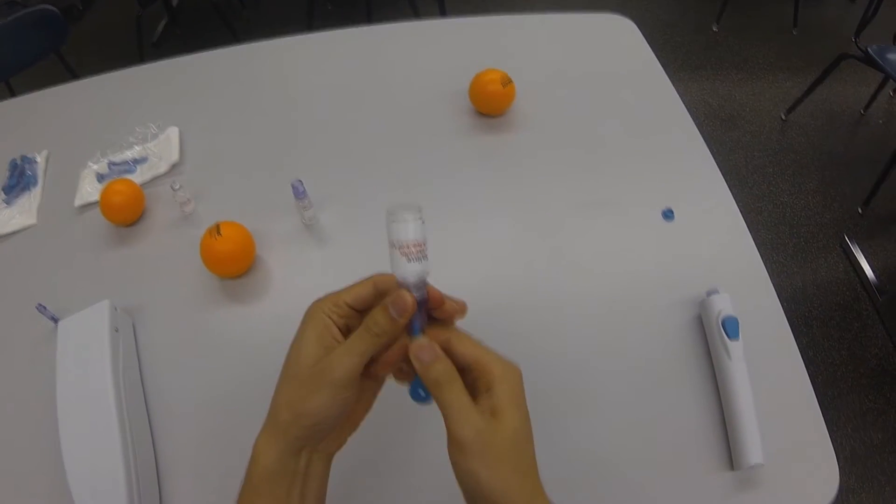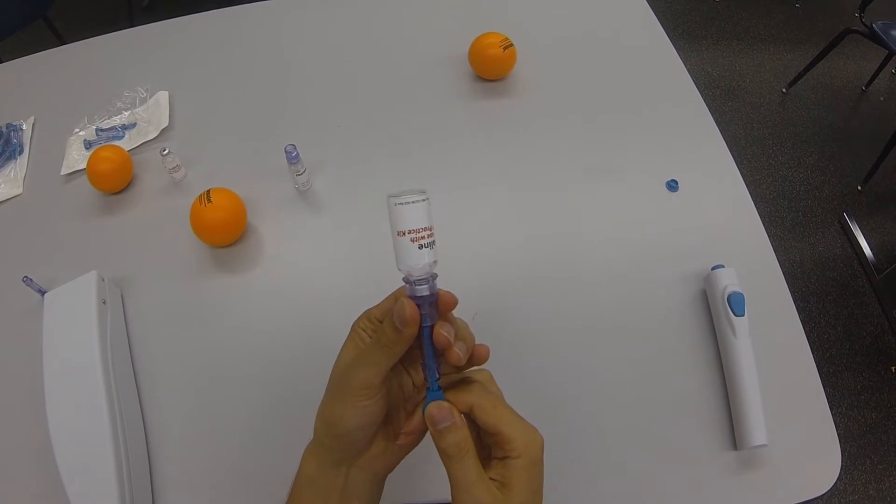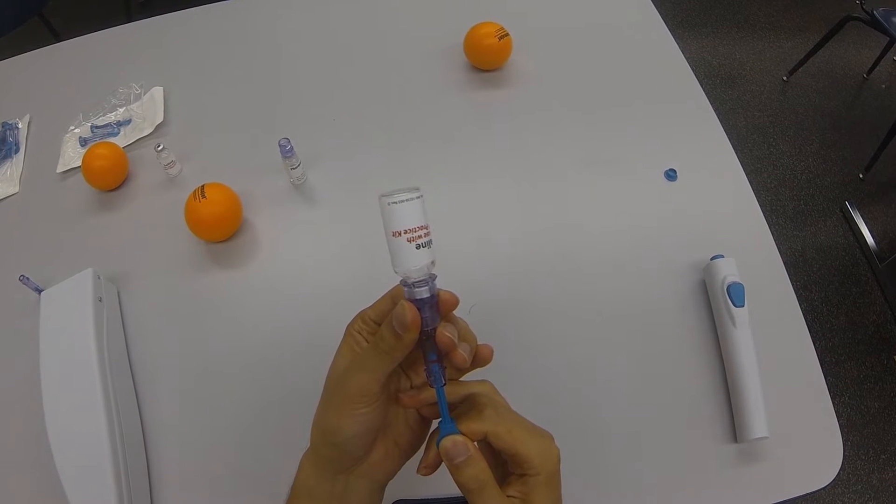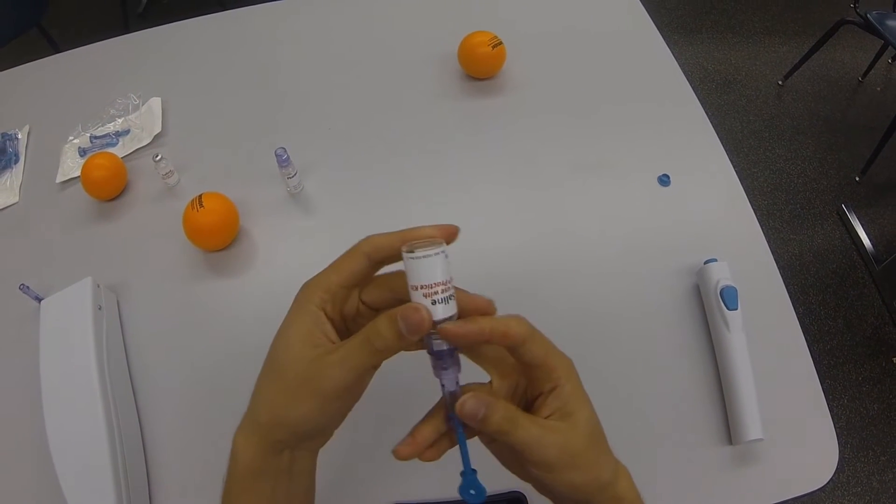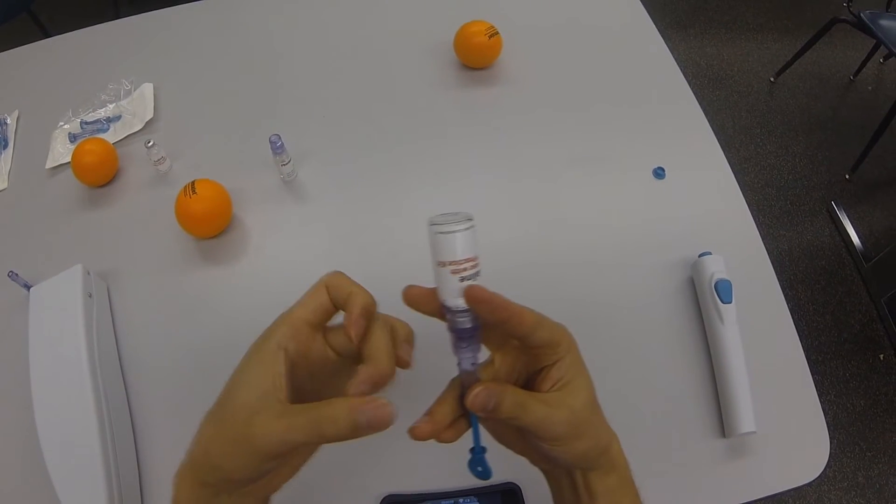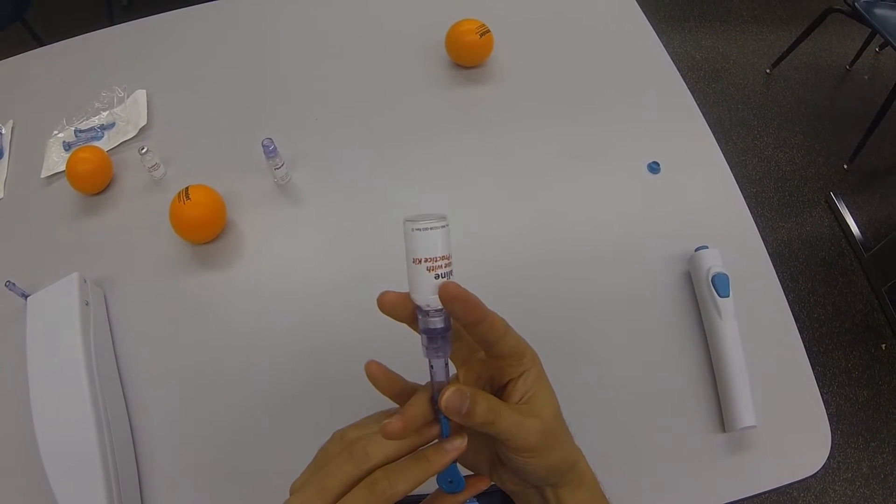Now pull the blue plunger down to draw the dose. If you overfill, this is fine because the injector automatically adjusts for the dose. You can hold the bottle by your index and middle finger to stabilize it while you flick away any bubbles. You can readjust your dose as necessary.